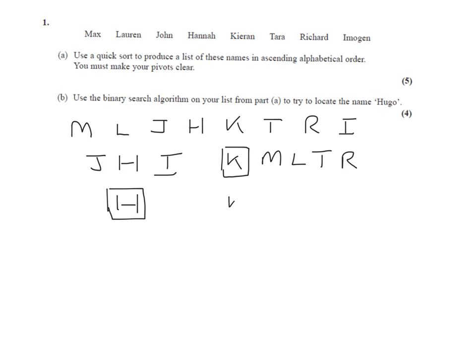K has been a pivot, so that stays like that, and the pivot on the right-hand list is between L and T. Remember, if we've got an even number, we take the letter to the right of the middle. The middle is there, the one to the right is there. So our pivot is going to be T.